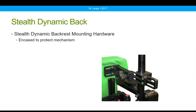This is the dynamic backrest mounting hardware from Stealth Products. It looks very similar to typical hardware used to mount a linear back to a seating system, but this mechanism allows a slight degree of movement. This is an example of a dynamic back not designed to provide a large amount of movement — it's designed to protect hardware. If you're working with a client who tends to damage equipment but cannot tolerate or respond well to a large amount of movement, this provides a small amount of movement that primarily prevents damage.